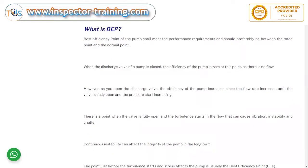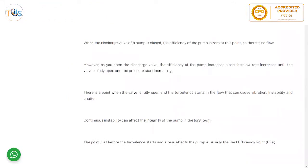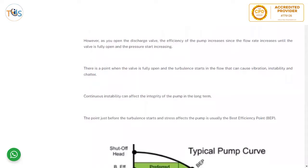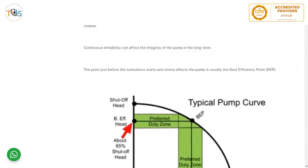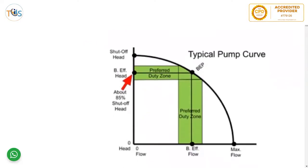When the discharge valve of the pump is closed, efficiency is zero because there is no flow. As you open the discharge valve, efficiency increases with flow rate until the valve is fully open. At that point, turbulence starts in the flow, causing vibration, instability, and chatter. Continuous instability can affect the integrity of the pump long term. The point just before turbulence starts affecting the pump is usually called the best efficiency point.